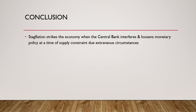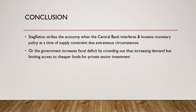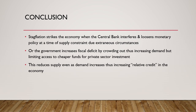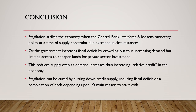In conclusion, stagflation strikes the economy when the central bank interferes with loose monetary policy, or the government increases its fiscal deficit by crowding out private sector investment and increasing demand. This reduces supply in the economy even as demand increases, thus raising credit relative to goods and services. Stagflation can be cured by cutting down credit supply, reducing fiscal deficit, or a combination of both — depending upon what started it to begin with.